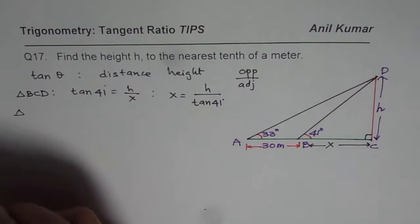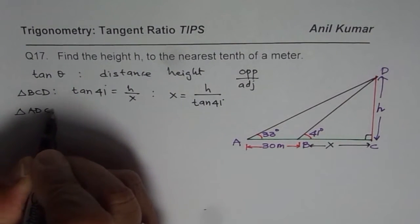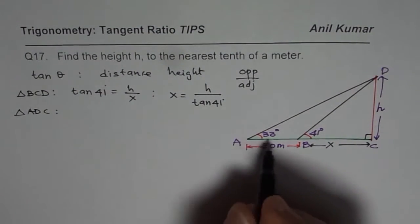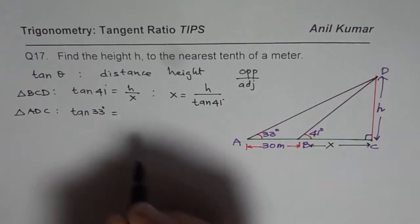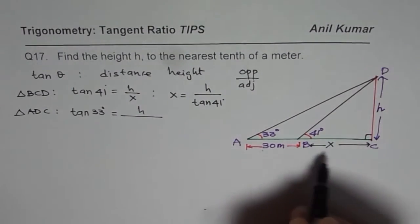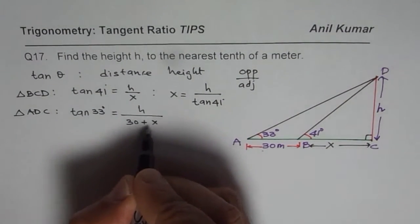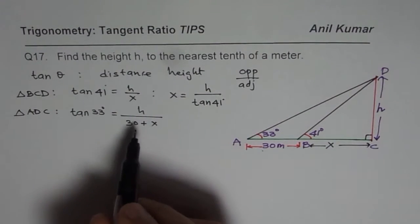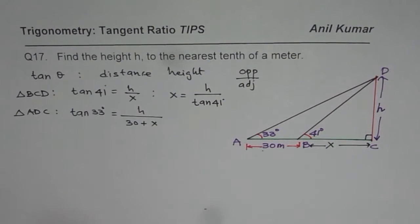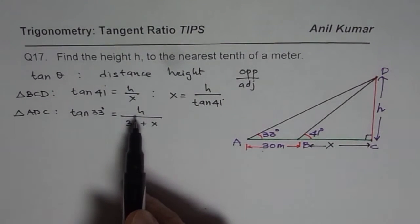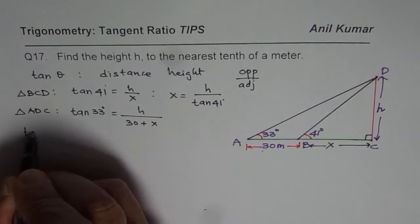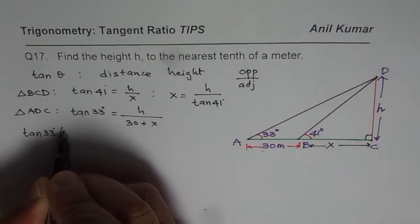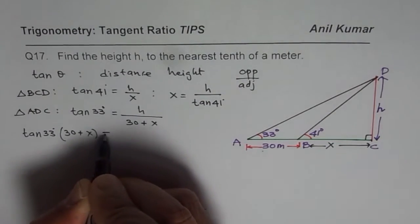Now let us consider the bigger triangle ADC. In this big triangle, tan 33° = height/(30 + x). Now in this particular case we can cross multiply and write what h is. So tan 33° times (30 + x) is equal to h.